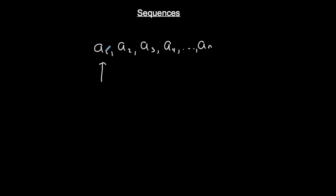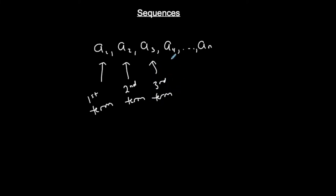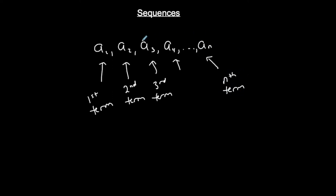The first number in the sequence is the first term. The second number is the second term. The third number is the third term, and so on and so forth. The subscripts are representing the term number. So if I see a₁, I'm thinking first term; a₂, second term; a₃, third term; a₄, fourth term; aₙ, the nth term. This is a general representation of a term number.